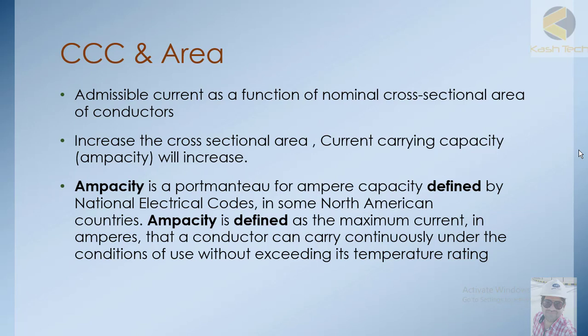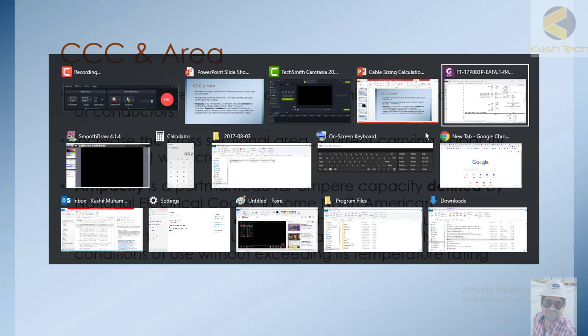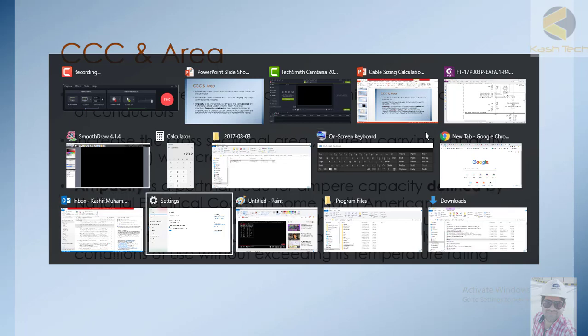Ampacity is defined by the National Electric Code in some North American countries. Ampacity is defined as the maximum current in amperes that a conductor can carry continuously under conditions of use without exceeding its temperature rating.